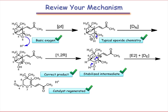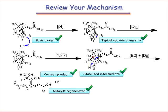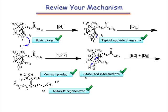Let's review our postulated mechanism. We had justification for each step of the way. In the first step, protonation of the epoxide, and then in the second, opening via DN, are both standard epoxide chemistry. The following 1-2R step makes sense in light of the resonance stabilization of the resulting intermediate, and finally, the elimination yields the correct product and regenerates the acidic catalyst.